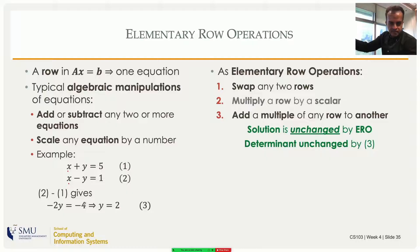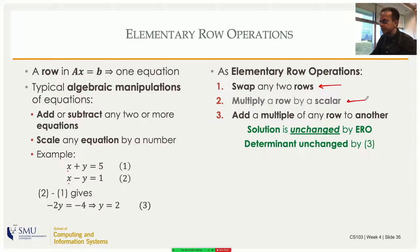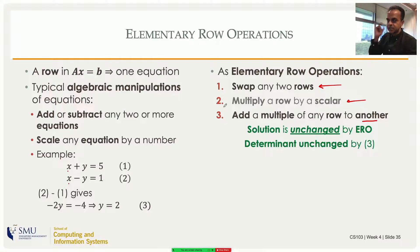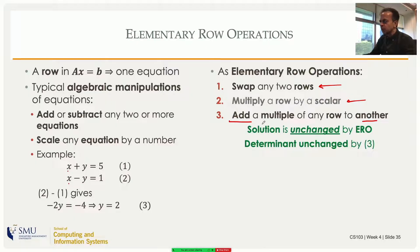Corresponding to these algebraic manipulations on equations, you can define row operations on the coefficient and constant matrix: you can swap any two rows, multiply a row by a scalar, or add a multiple of one row to another row. In Gaussian elimination we will not use the second operation (scaling), shown in gray. The key point is that any of these elementary row operations leaves the solutions and solvability conditions unchanged. Also, if you only use the third operation and A is a square matrix, the determinant does not change.